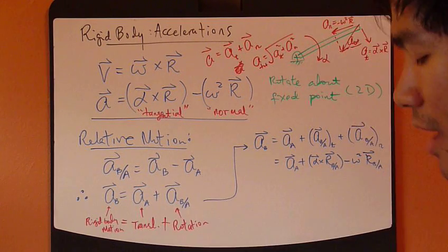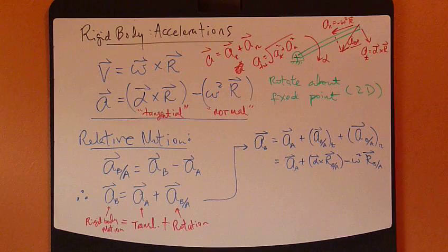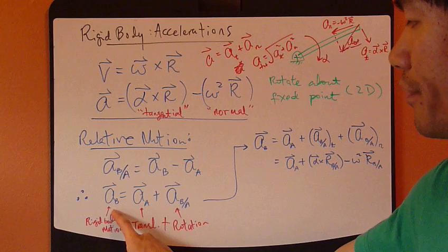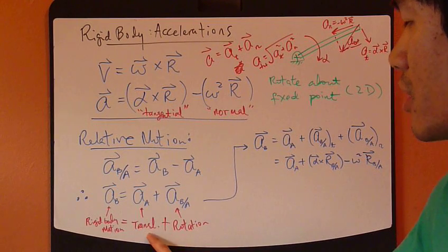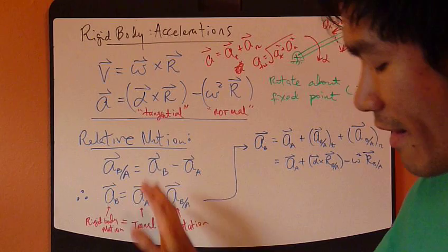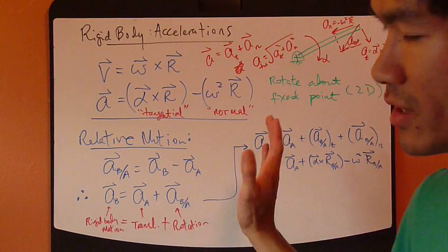This is exactly how we analyze acceleration for rigid body motion. This rigid body motion equals translation plus rotation. Same analysis method as we did for velocity.